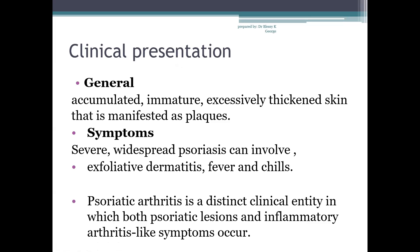Next is clinical presentation. Psoriatic lesions are relatively asymptomatic, but about 20% of patients complain of pruritus. Generally, it is manifested as plaques of excessively thickened skin. Symptoms for severe widespread psoriasis may include exfoliative dermatitis, fever and chills. Another condition is psoriatic arthritis — a distinct clinical entity in which both psoriatic lesions and inflammatory arthritis-like symptoms occur.